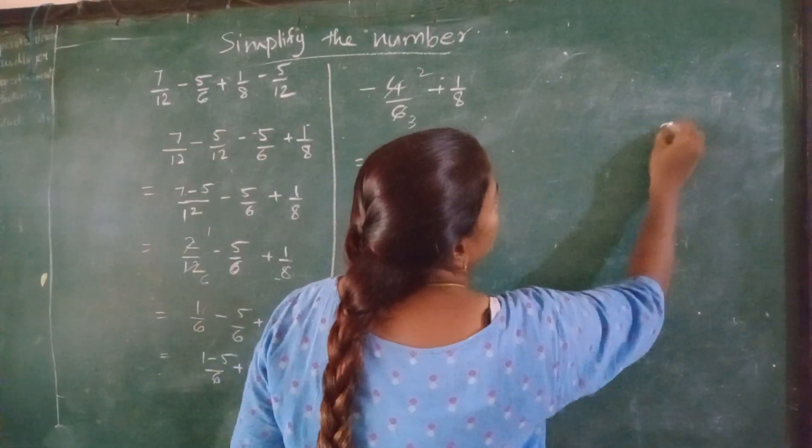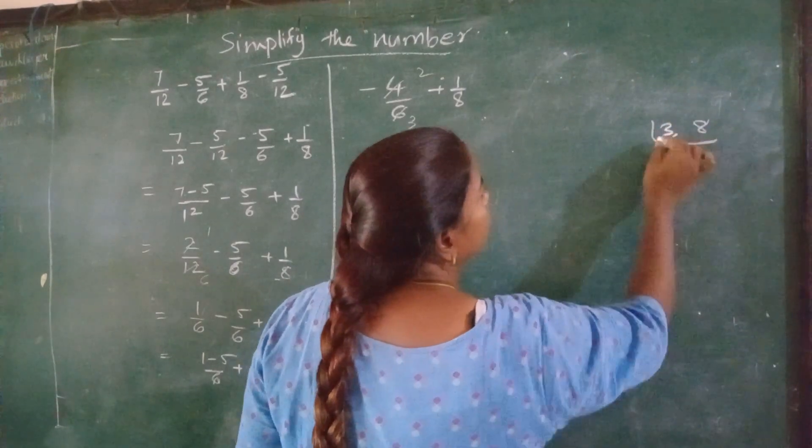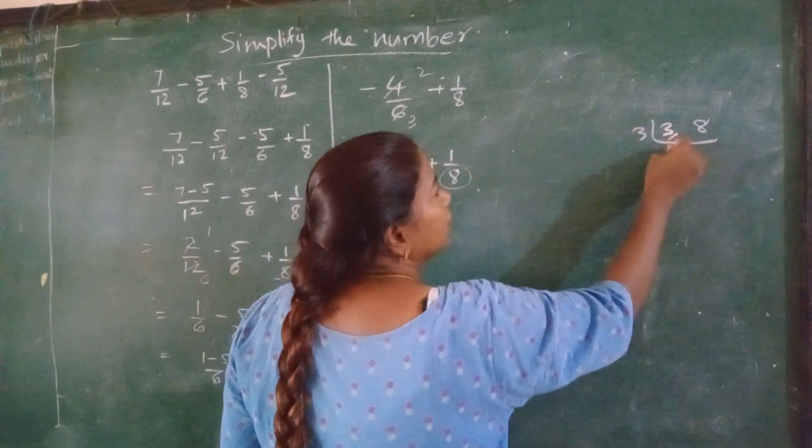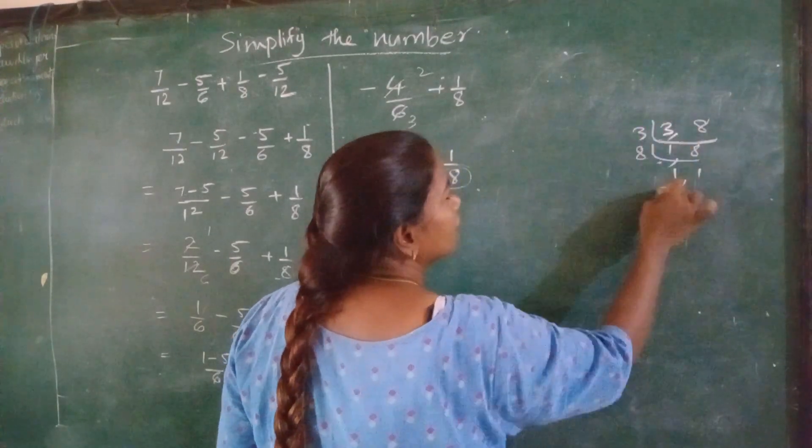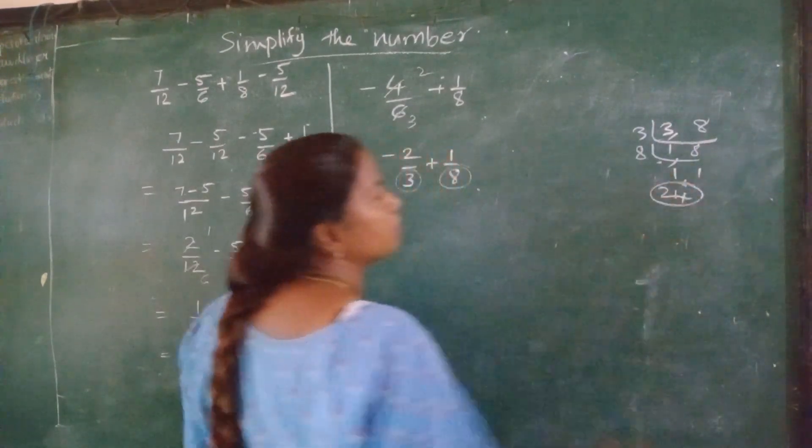3 and 8. Of course 3 ones are 3 and 8 as it is, 8 ones are 8. 8 threes are 24. So the LCM is 24.